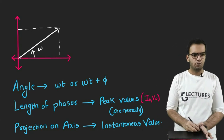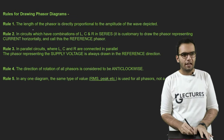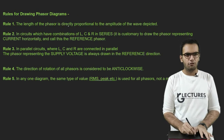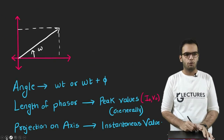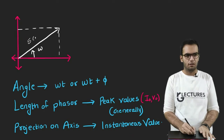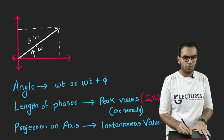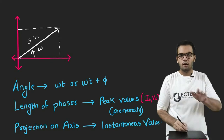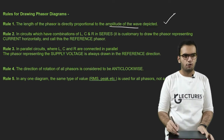There are a few rules to draw a Phasor. Rule 1: the length of the Phasor is directly proportional to the amplitude of the wave depicted. So suppose the amplitude of my quantity is φ — I draw this length as 5 cm or 5 m or any unit, but the length of the arrow represents the amplitude of the quantity.